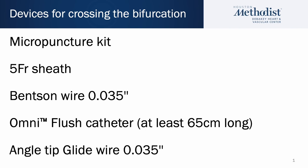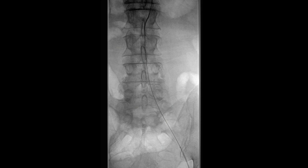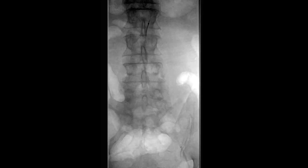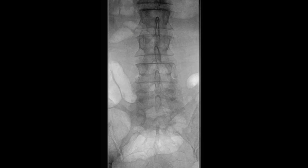Following left common femoral artery access under ultrasound guidance with a micropuncture kit, a 5 French sheath was placed and we passed a Benson wire into the abdominal aorta. After that, an Omniflush catheter was introduced and the wire was retracted, allowing the catheter to gain its shape. It is now located at the level of the L2 vertebral body, and we have successfully positioned our catheter in the abdominal aorta.